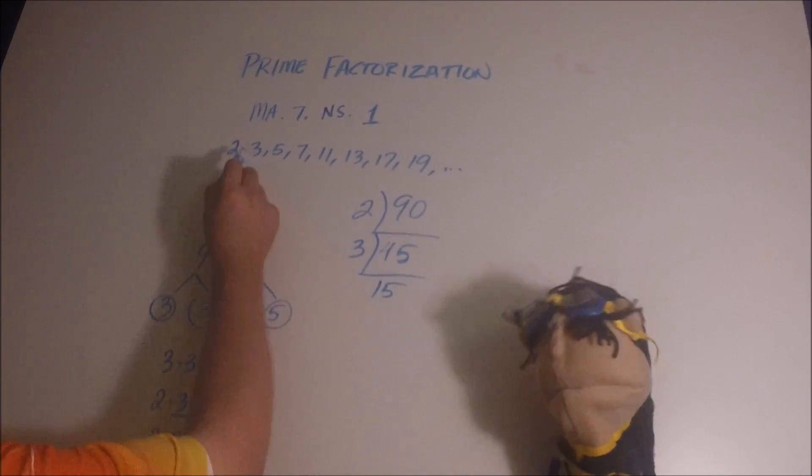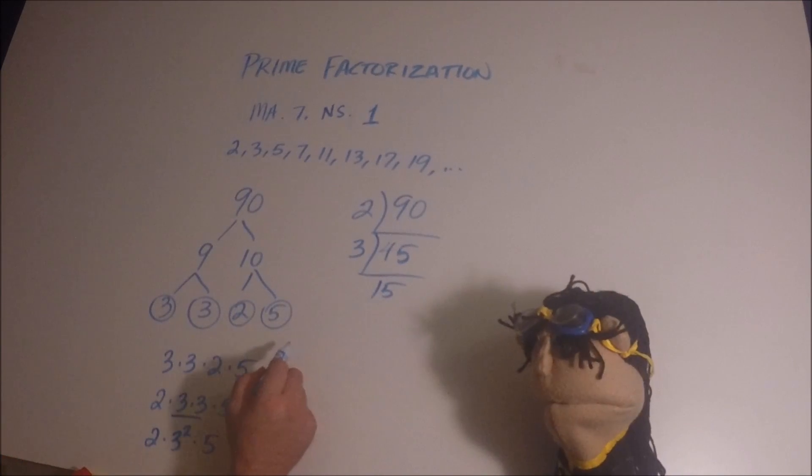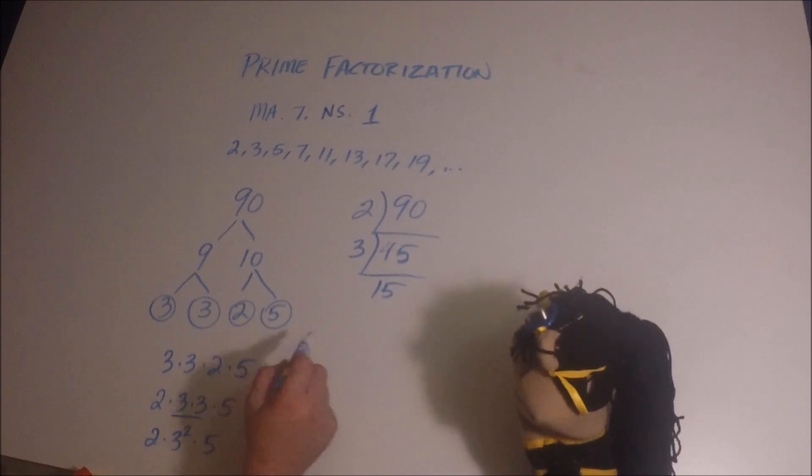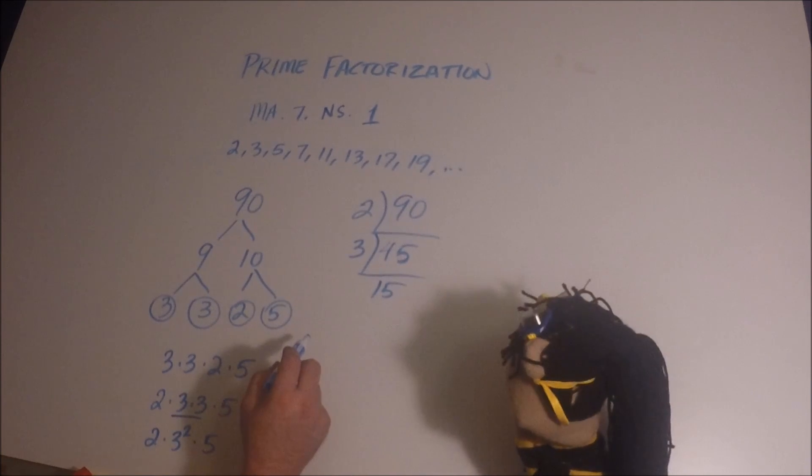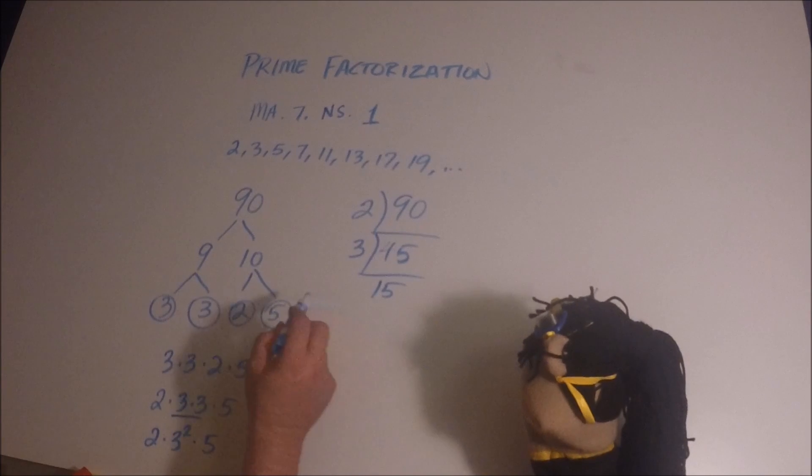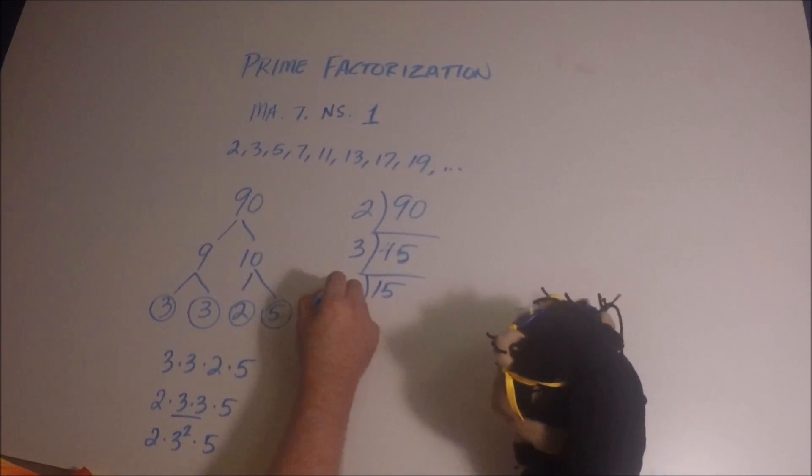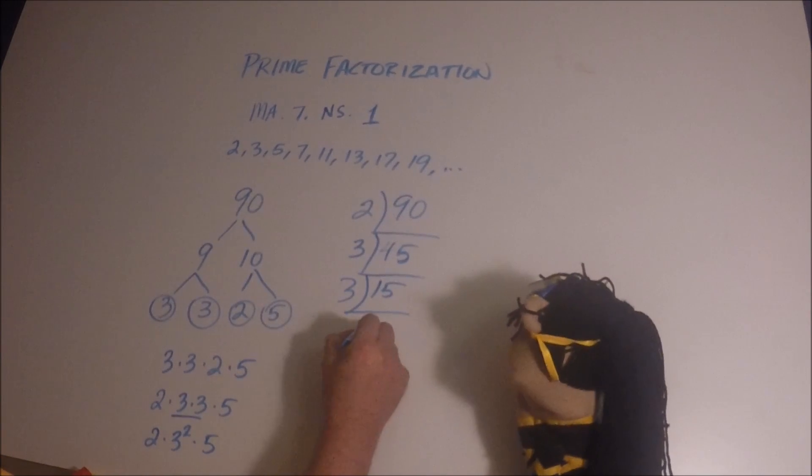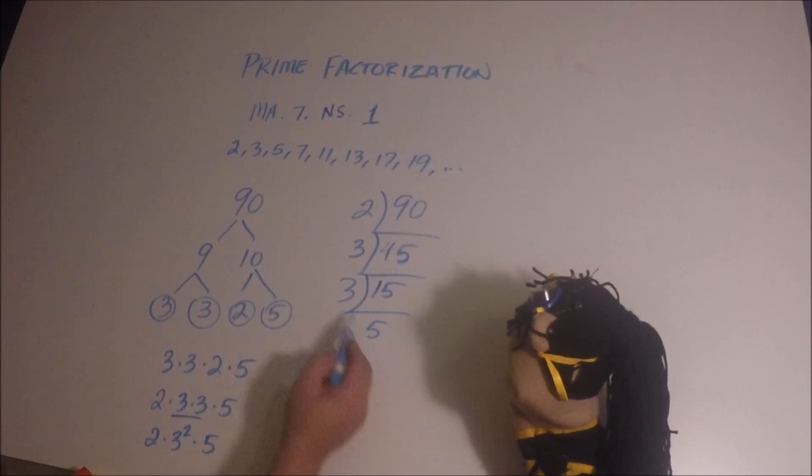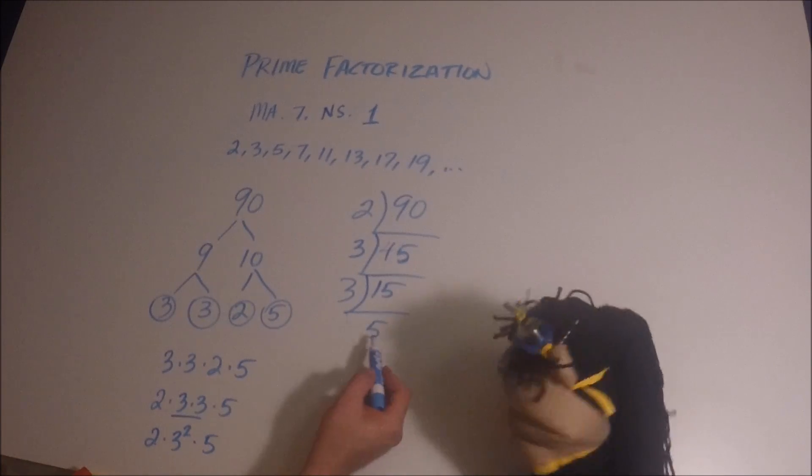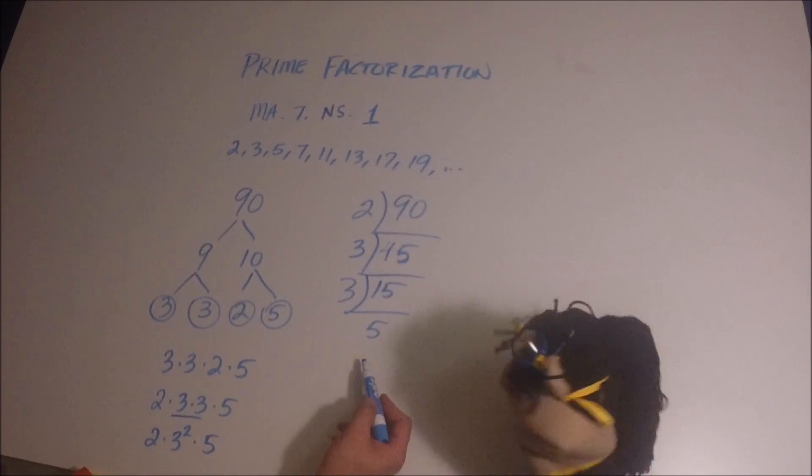And now let's try 3 again. Does 3 go into 15? Yes. How many times? 5. Okay. So we're going to divide 3 again into there and that's going to make 5. And look, 5 is a what? Prime number. 5 is a prime number so we know that we're finished. We don't have to break it down anymore.